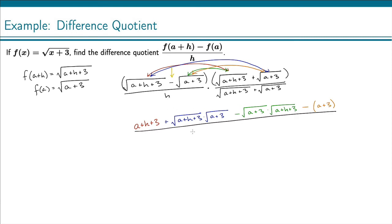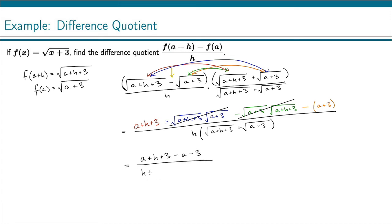This is all over h times the conjugate expression — we won't distribute the denominator. The reason we multiplied by the conjugate in the numerator is specifically because it makes things cancel. Notice this blue term and the green term are the same thing but one is positive and one is negative, so those cancel out. In the numerator we now have a plus h plus 3, and distributing the minus gives us minus a minus 3. The a and minus a cancel, and the 3 and minus 3 cancel.